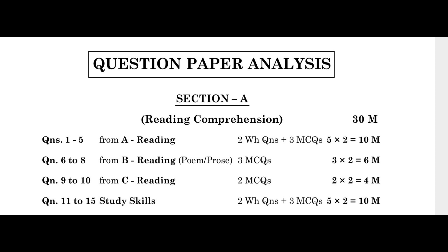Questions 6 to 8 from B Reading, poem or prose, 3 MCQs, 3 times 2 equals 6 marks. Questions 9 to 10 from C Reading, 2 MCQs, 2 times 2 equals 4 marks.